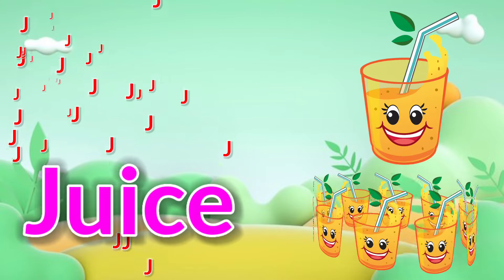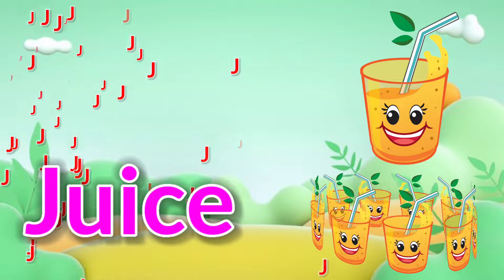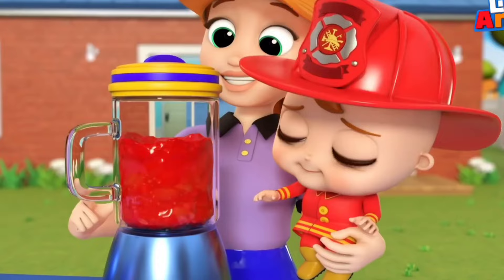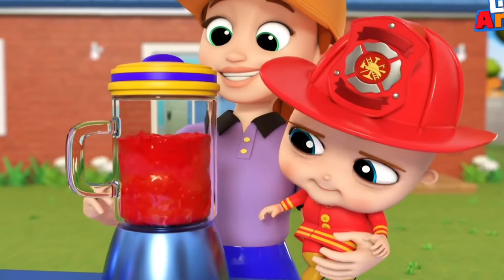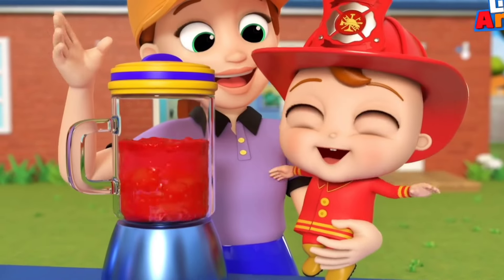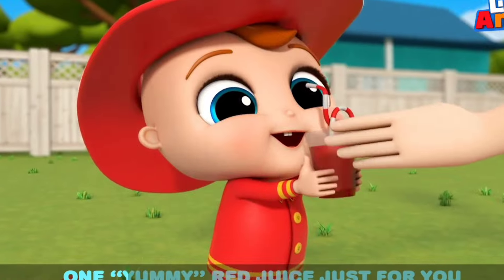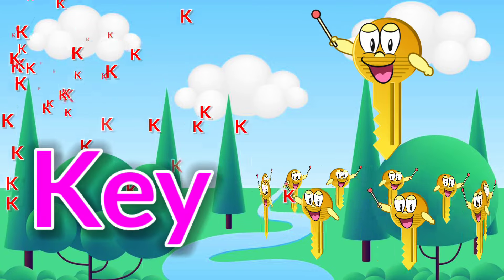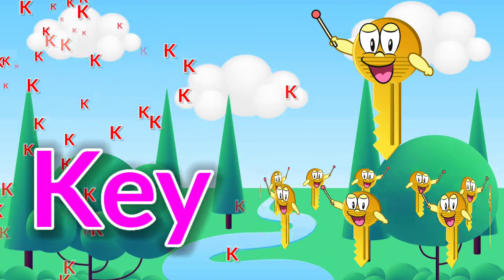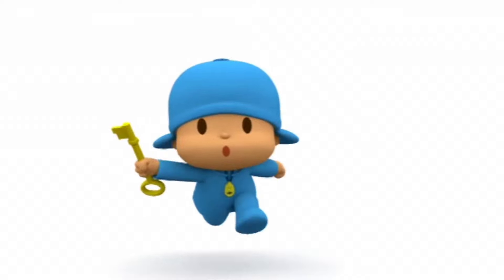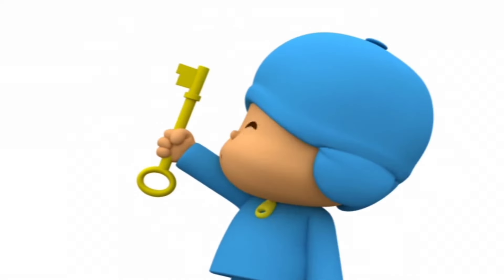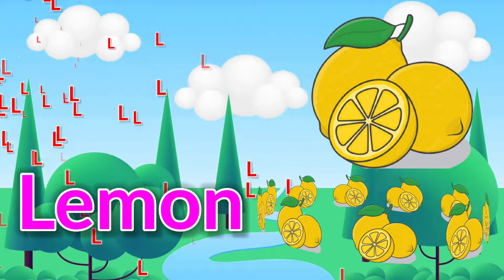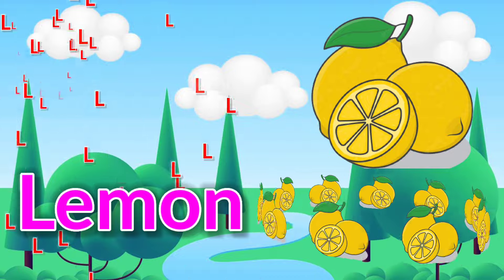J is for Juice. One yummy red juice. K is for Ki. L is for Lemon.